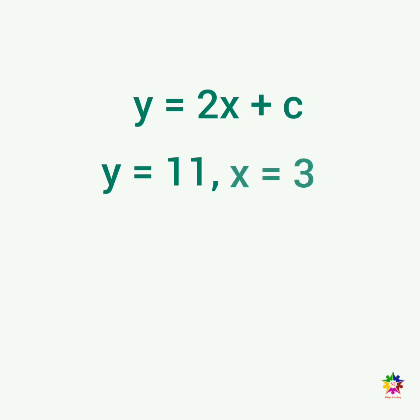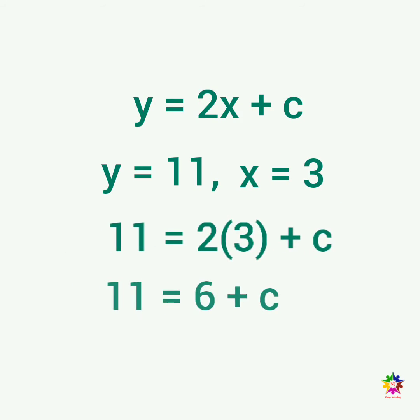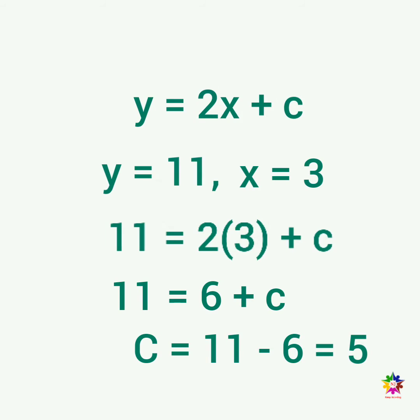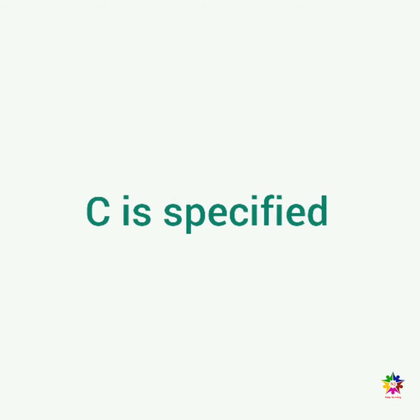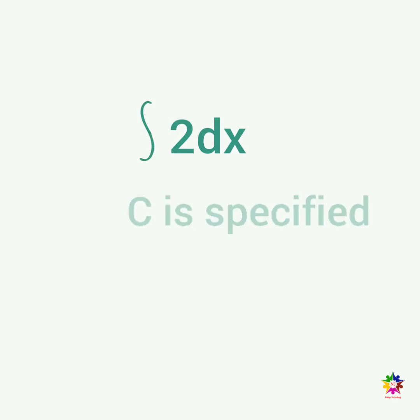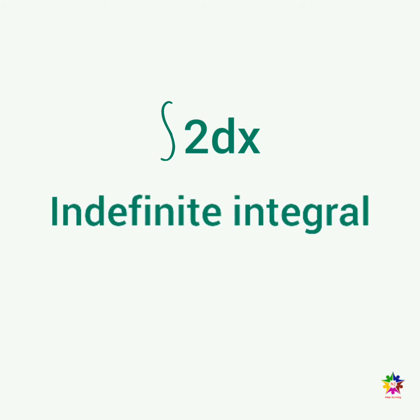Substituting y equal to 11 when x equal to 3, we get constant C equal to 5. Therefore, y equal to 2x plus 5. Note that even though C is specified, integral of 2 dx remains an indefinite integral because x is unspecified.